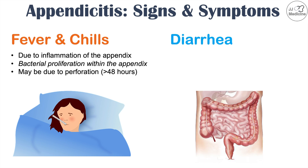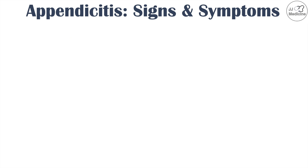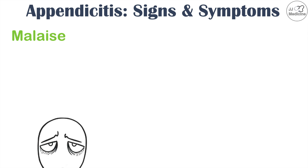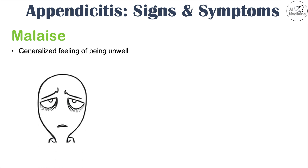Diarrhea — watery stool — is another possible symptom of appendicitis, but it only occurs in 10 to 20 percent of patients, so it is less likely. Malaise, a generalized feeling of being unwell, is also common in appendicitis.